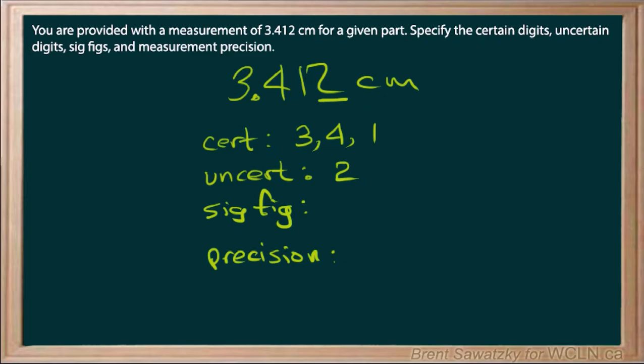Okay, so next, sig figs. And so our significant digits, our significant figures, is the total number of digits that were used in our measurement, if done properly. So that includes both the certain and the uncertain digits. So we have the 3, the 4, the 1, and the 2. So we have four sig figs.